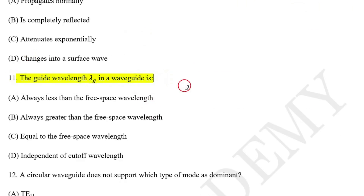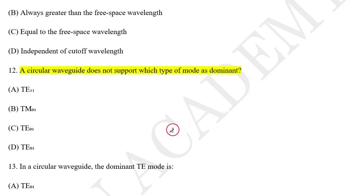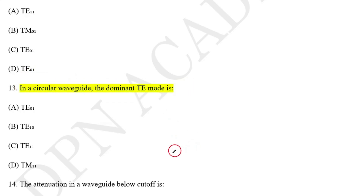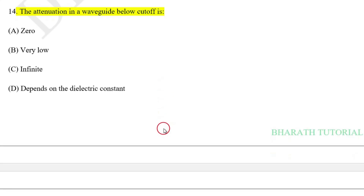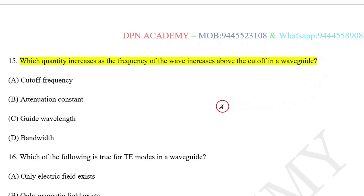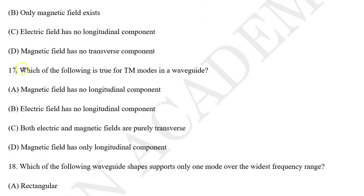Question number 11: The guide wavelength lambda G in a waveguide is? Question number 12: A circular waveguide does not support which type of mode as dominant? Question number 13: In a circular waveguide, the dominant TE mode is? Question number 15: The attenuation in a waveguide below cutoff is? Question number 16: Which quantity increases as the frequency of a wave increases above the cutoff in a waveguide? Question number 17: Which of the following is true for TE mode in a waveguide?